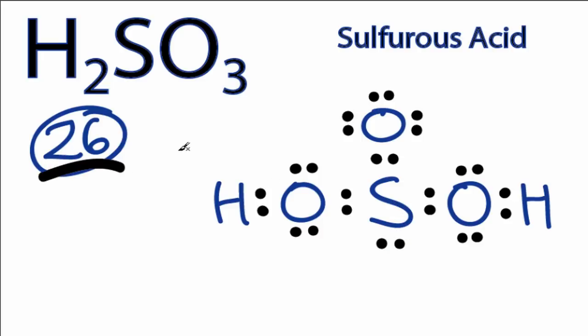So we've used all 26 valence electrons, and everything in this structure has a full outer shell. So it looks like a pretty good Lewis structure.